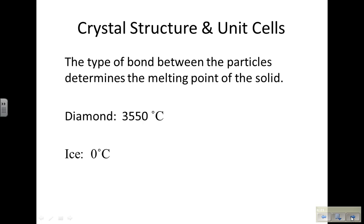Crystal structure and unit cells. The type of bond between the particles in the solid determines the melting point. So a diamond has very strong bonds and melts at a very high temperature of over 3,000 degrees Celsius, while ice melts at 0 degrees Celsius.